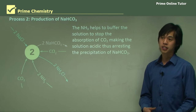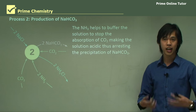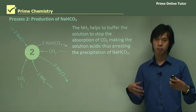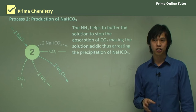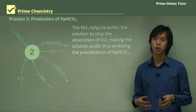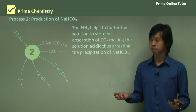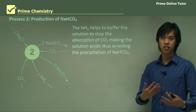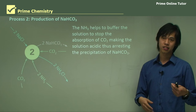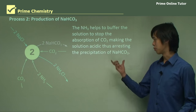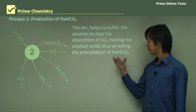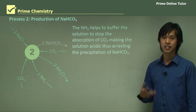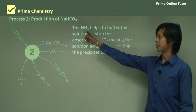The reason we use ammonia is because it helps to buffer the solution. As we continue to add CO2, the acidity of the solution would increase because CO2 forms carbonic acid. But having NH3 present absorbs those extra H⁺ ions to stop the acidity from rising. If the acidity rises, the NaHCO3 re-dissolves back into solution, and we don't want that — we want it to precipitate out so we can collect it. So we use NH3 to keep the solution basic.